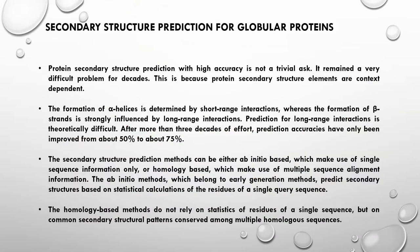There are two types of proteins: globular proteins and transmembrane proteins. Globular proteins flow freely in the body and are not bound to any membrane. Transmembrane proteins are bound to a membrane — they can be extrinsic proteins or transmembrane channel proteins. In this video we are dealing with secondary structure prediction for globular proteins.